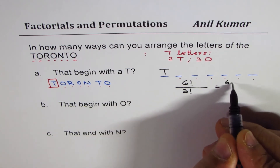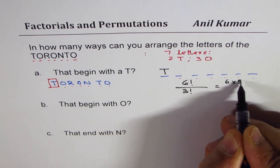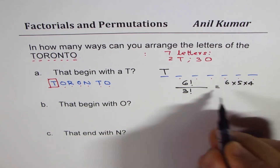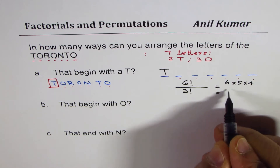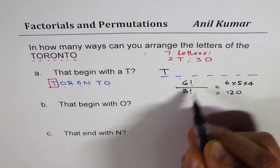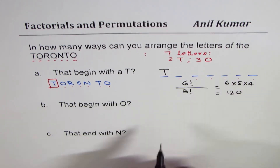That means six times five times four, which gives 120. Three factorial cancels out, so 120 is the answer for the first condition.